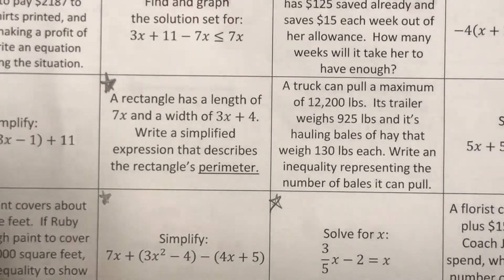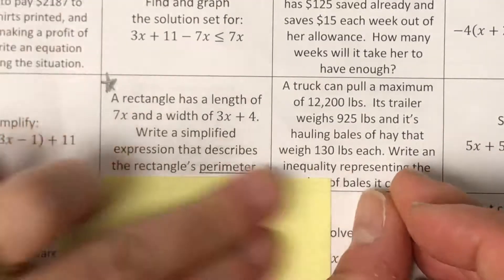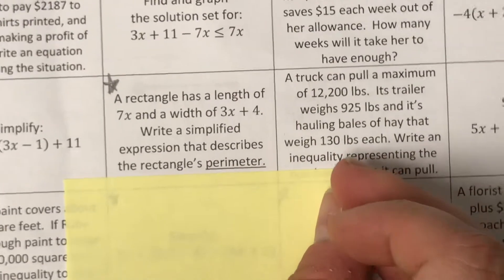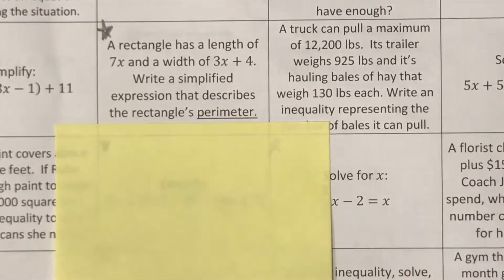This one right here, a rectangle has a length of 7x and a width of 3x plus 4. Write a simplified expression that describes the perimeter.